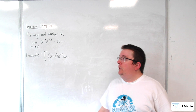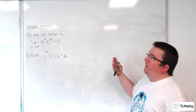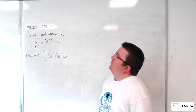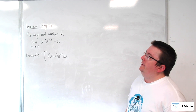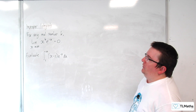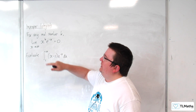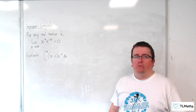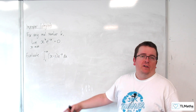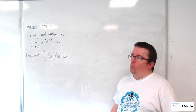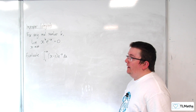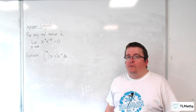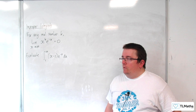There are two limits that you need to know. The first one is that for any real number k, the limit as x tends to infinity of x to the k times e to the minus x is equal to 0. That's not immediately obvious as to why that would be the case, and I'm going to go through a proof of that now.